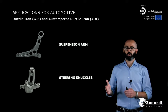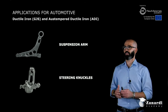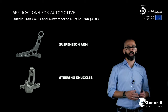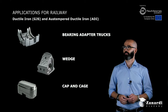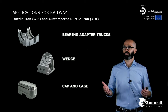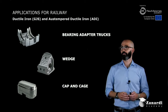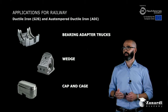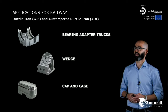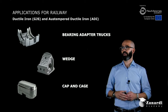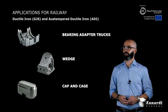Also in automotive, depending on the kind of foundry, ductile iron and ADI can make a lot of sense for suspension arms, steering knuckles, and so on. In the railway sector, for example, I report applications for the barber bogie — including the bearing adapter, wedge, and cup and cage — though the number of applications can be very high when you consider brake systems and more.